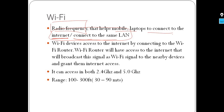Bluetooth is used for data sharing and wireless headphones. Wi-Fi, on the other hand, is connected to the internet. The key difference is that Wi-Fi provides internet access, while Bluetooth is mainly for device-to-device connections. Any device connected to Wi-Fi can access the network.